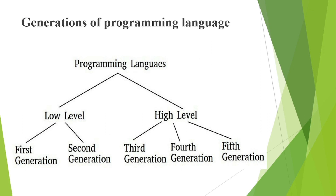We have seen this classification image in the last video as well. These languages are classified into two main categories: low-level and high-level. Low-level is further divided into first-generation and second-generation, and high-level into third, fourth, and fifth generation.